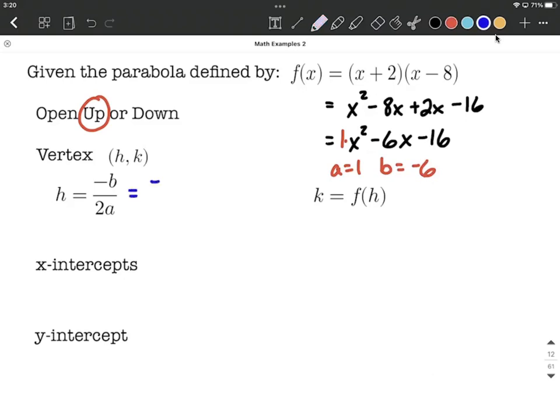So we have the negative of b, which is negative 6, over 2 times a, which is 1. This reduces down. The negative of negative 6 is positive 6 over 2, which works out to be 3. So we now have the x value for our vertex.